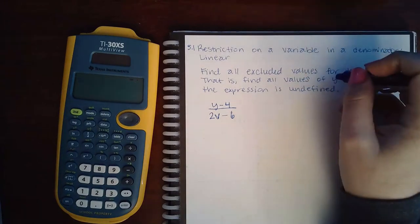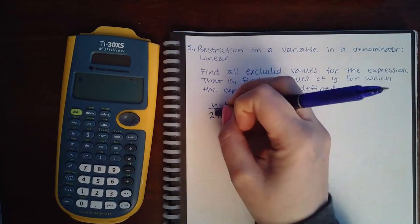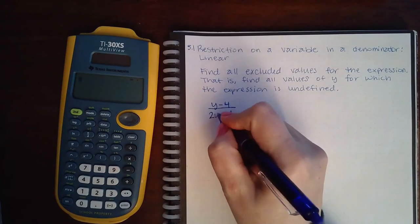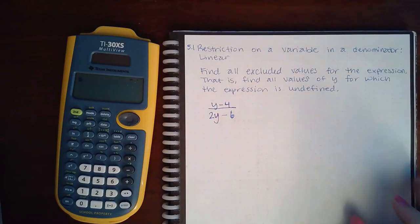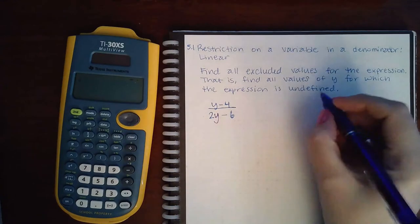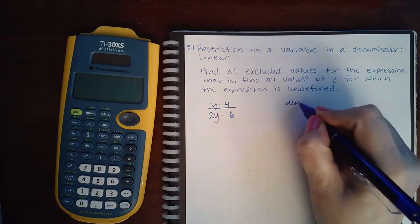And it actually should be y, this should be a y as well. So when we're trying to find out where a fraction is undefined, fractions are undefined when their denominators equal 0.